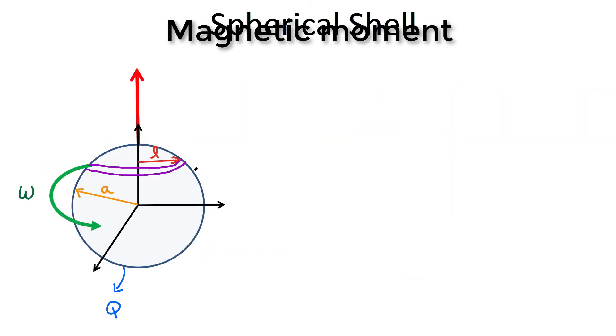So here's my shell. The shell has a radius A. It's rotating at some angular velocity omega and a total charge deposited on that surface is Q and it's uniformly distributed.